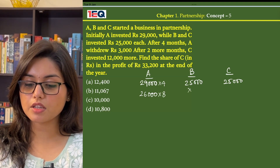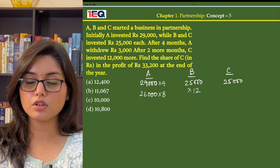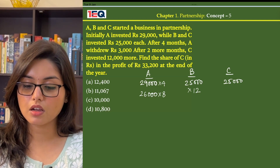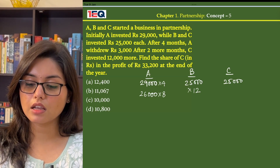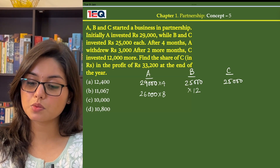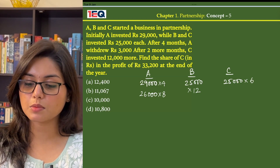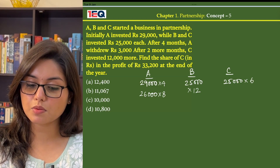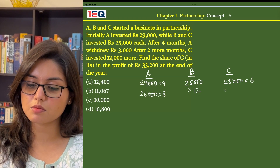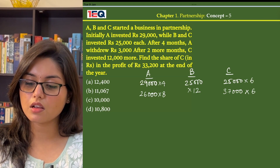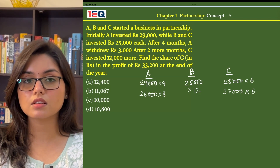B invested Rs 25,000 for 12 months, that is for the entire year. C, on the other hand, invested Rs 25,000 for the first 6 months, and after 6 months he invested Rs 12,000 more, increasing his investment to Rs 37,000 for the next 6 months.